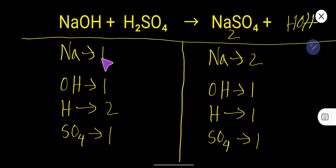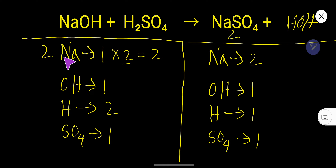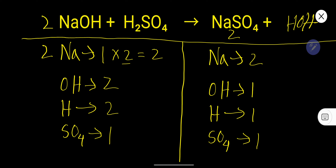Now balance sodium: here one, here two. To balance sodium, you can multiply here by two — that gives us two. If you multiply by something, that something must come before the atom. So this sodium has come from here, so place a two here. The number of sodium will now be two, and the number of OH will be two. So here we have one, let us change this one to two.